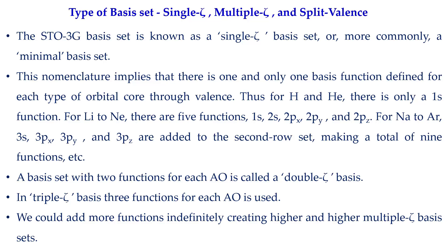For lithium to neon you will have five basis functions, because there are five orbitals: 1s, 2s, and three 2p orbitals. For sodium to argon, which includes the third-row elements, you have up to the second-row set plus the 3s, 3px, 3py, and 3pz orbitals, giving a total of nine basis functions.